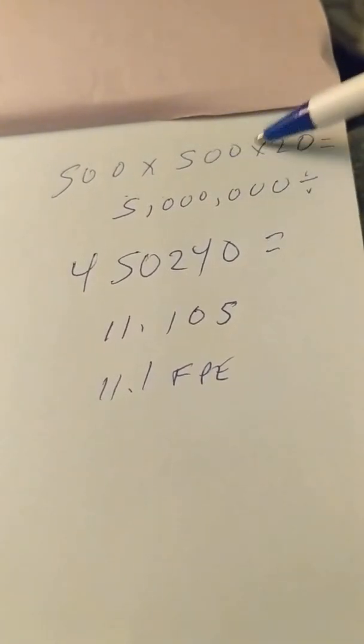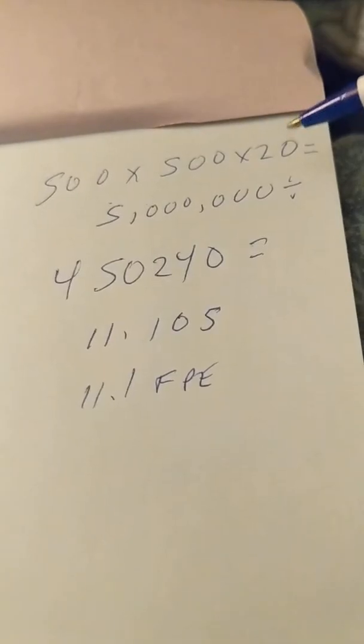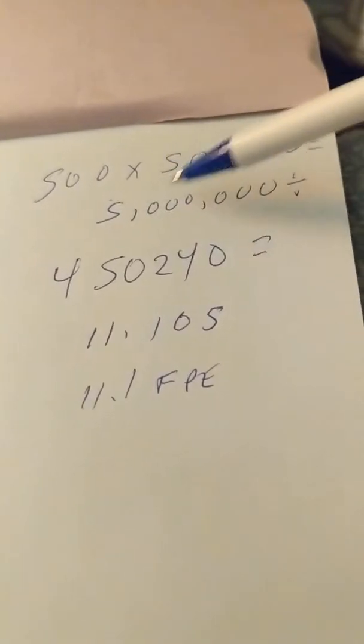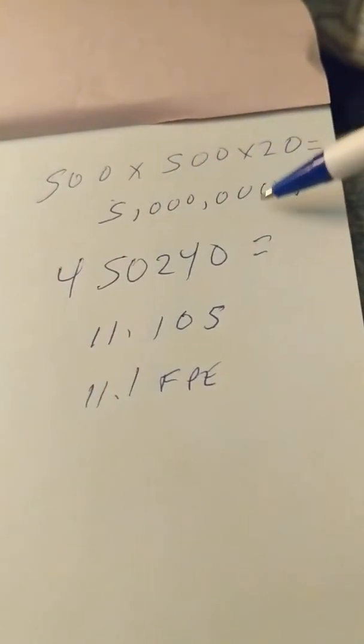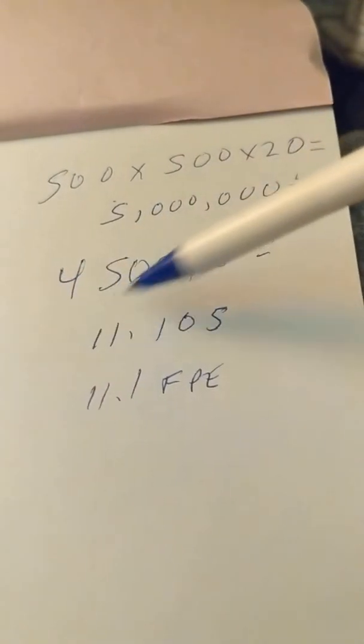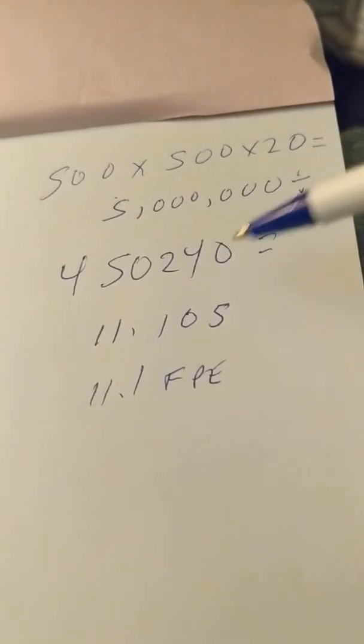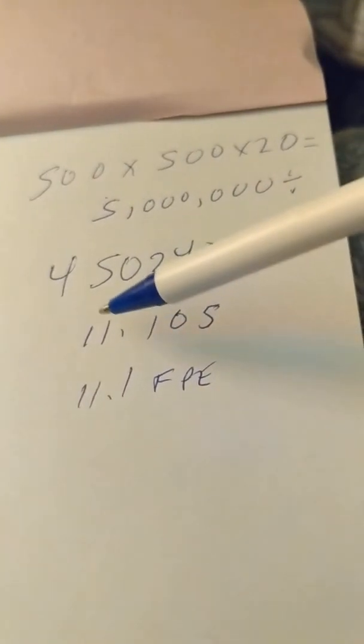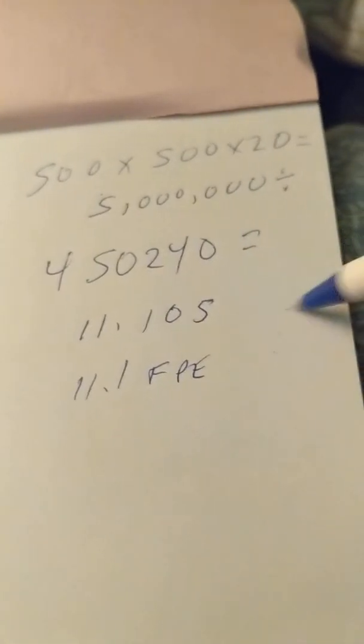Whatever numbers you get, you multiply that feet per second times the weight of the pellet. This formula comes up to 5 million. You take the 5 million divided by the number 450240, and what you come up with is 11.105 dot dot dot.